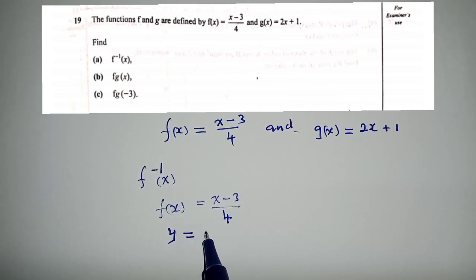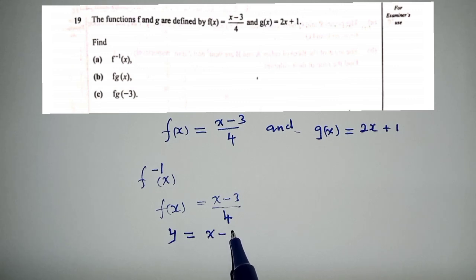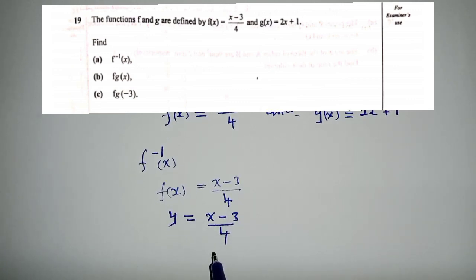We put y where f(x) is, so y = (x - 3) / 4. The next thing here will be to make x the subject of the formula. So we cross multiply: y times 4 is 4y, which equals x - 3.